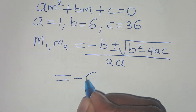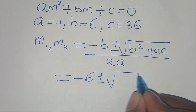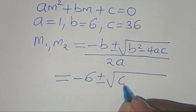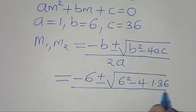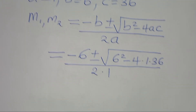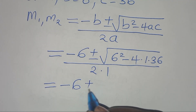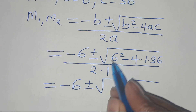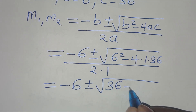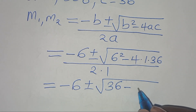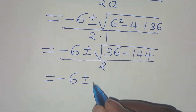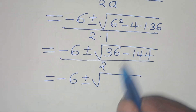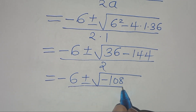So we have minus 6 plus or minus the square root of b squared, that is 6 squared, minus 4 times a, which is 1, times c, which is 36, over 2 times 1. This gives us minus 6 plus or minus the square root of 36 minus 144, which is minus 108, all divided by 2.